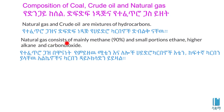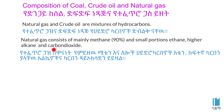Natural gas consists of mainly methane and a small portion of ethane, higher alkanes, and carbon dioxide. Natural gas is the same as methane. If hydrocarbons are methane, it is carbon. You can use hydrocarbons and carbon dioxide.